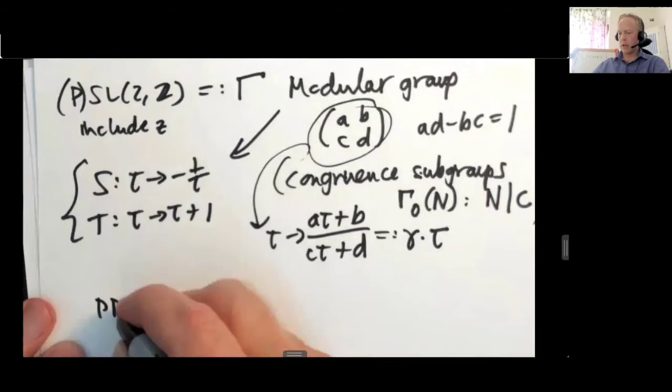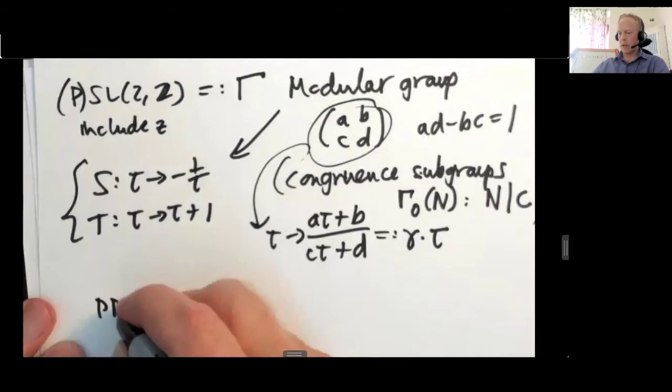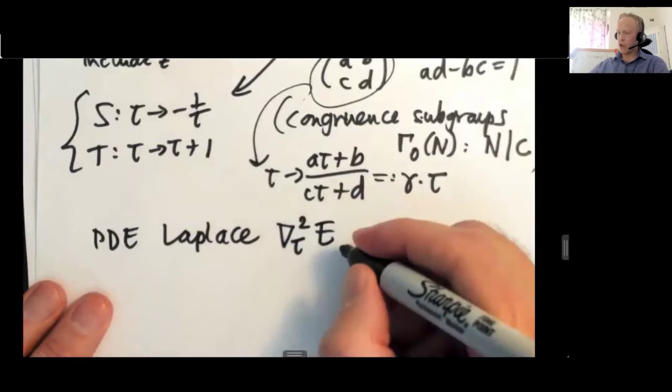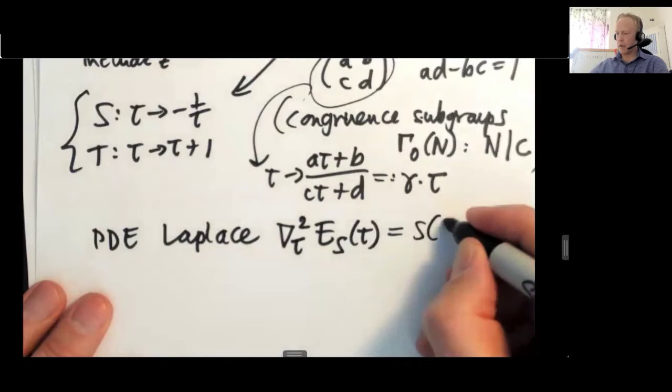So what about that differential equation? The differential equation is, again, the Laplace equation. But it is the Laplace equation in tau. So the non-holomorphic action stands here as a function of tau is an eigenfunction. So there are different conventions here. They could be a plus or minus. But let's just write something like this.